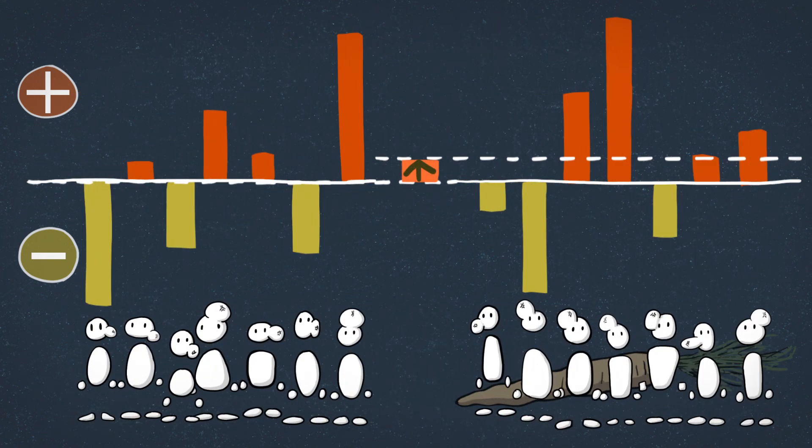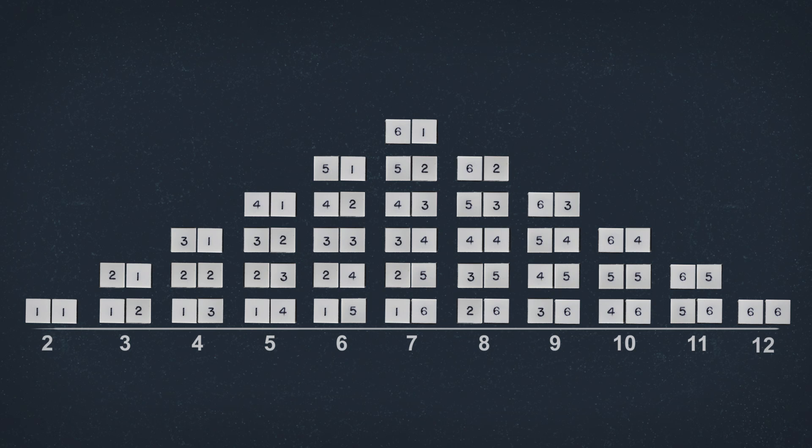What we can do to investigate that is to look at every possible combination we could have made with these people, assuming nothing we did mattered. Kind of like what we did with the dice. What we're looking for is the probability of seeing what we saw, assuming carrots do nothing.